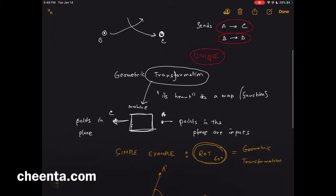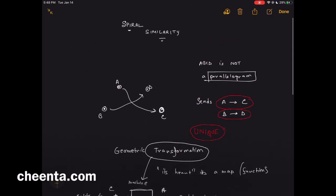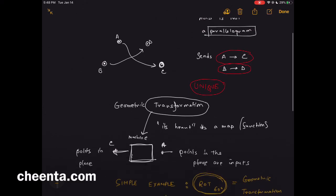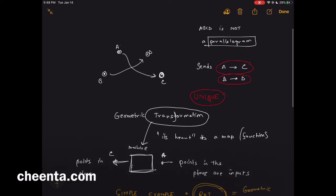We are interested in a much more complicated example which is spiral similarity. You see how beautiful it is because it can send any point A to any other point C, and simultaneously it can send B to D.